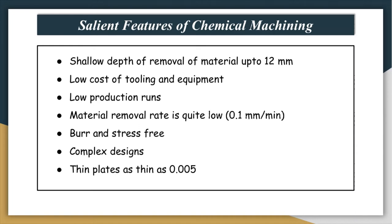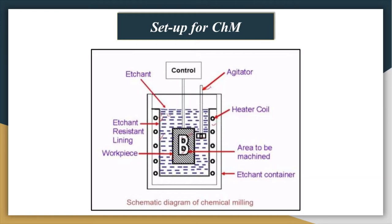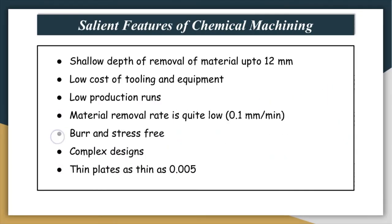As you can see in this diagram, in chemical machining there is no mechanical force and no thermal energy — it is only a chemical reaction that removes material. Hence, this process is burr-free and stress-free. Complex shapes and components can be made by this process, and thin plates as thin as 0.005 mm or 5 micrometers can be machined using this process.